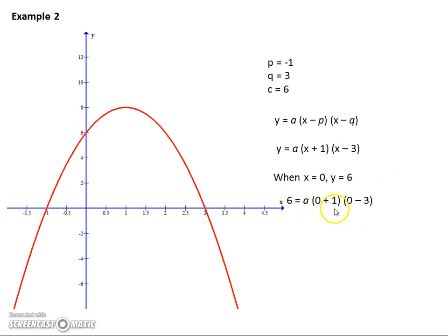Put that information in. We work out that a equals negative two. It was negative like I thought it would be, and then expand out your brackets and get your final answer.